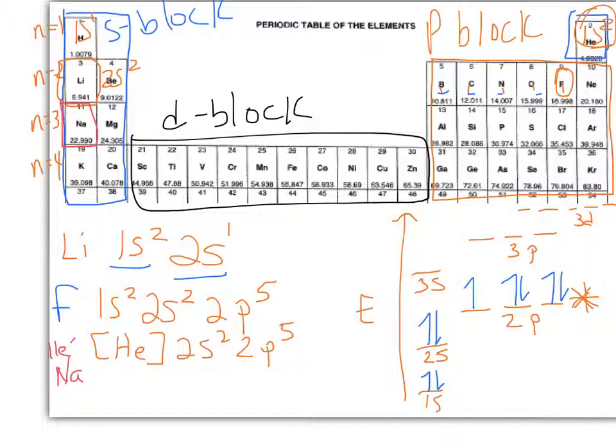So sodium: 1s1, 1s2. That's the same: 1s2, then 2s2. Now we're here, and this time we're going to fill the 2ps all the way with all 6 electrons, 2p6.